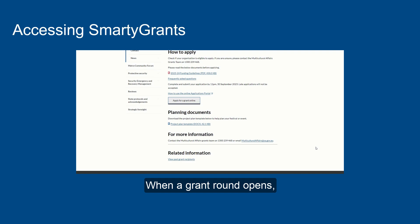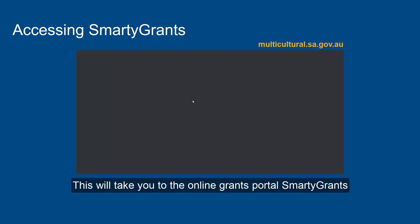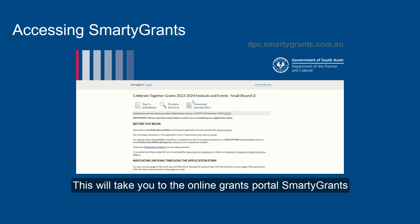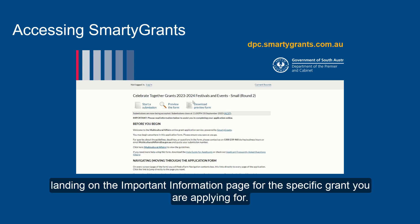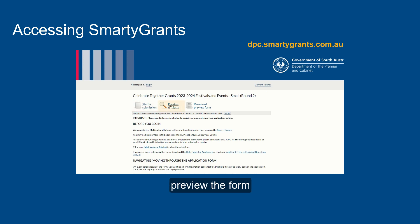When a grant round opens, click the Apply Now button on the Multicultural Affairs website. This will take you to the online grants portal, SMARTY Grants, landing on the important information page for the specific grant you are applying for. From this page, you will have the option to start a submission, preview the form, or download a PDF of the preview form.